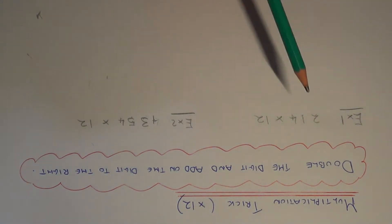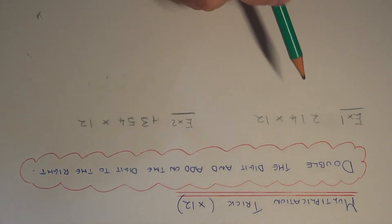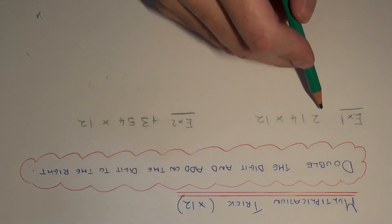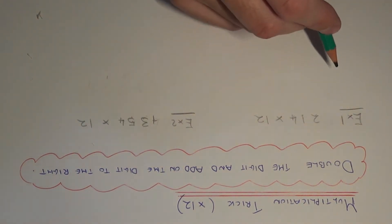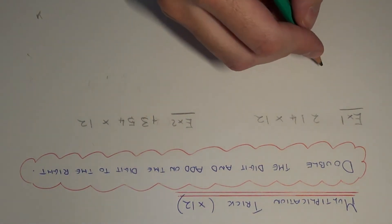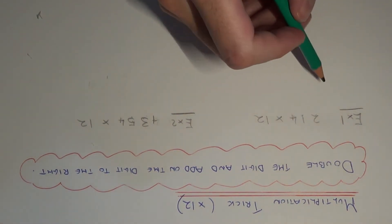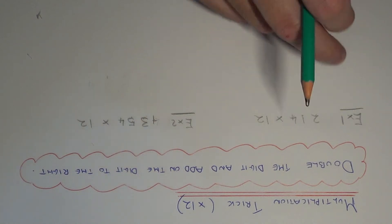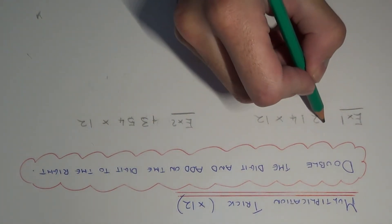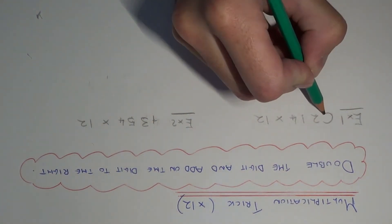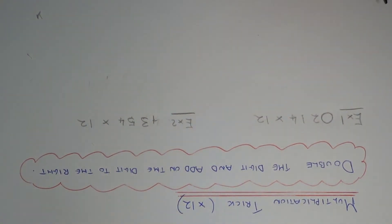Let's have a look at example 1. We need to work out 214 multiplied by 12. Before you start, you need to put a zero before the number that you're multiplying by 12.